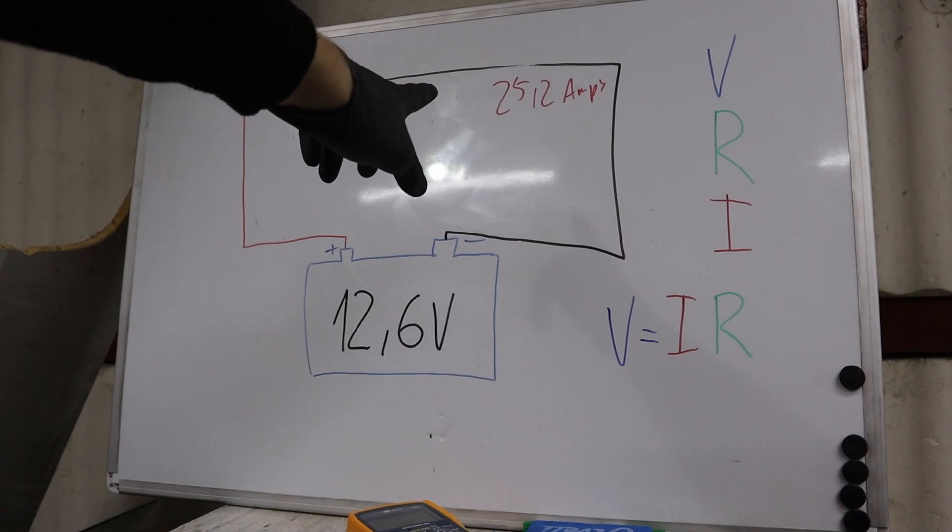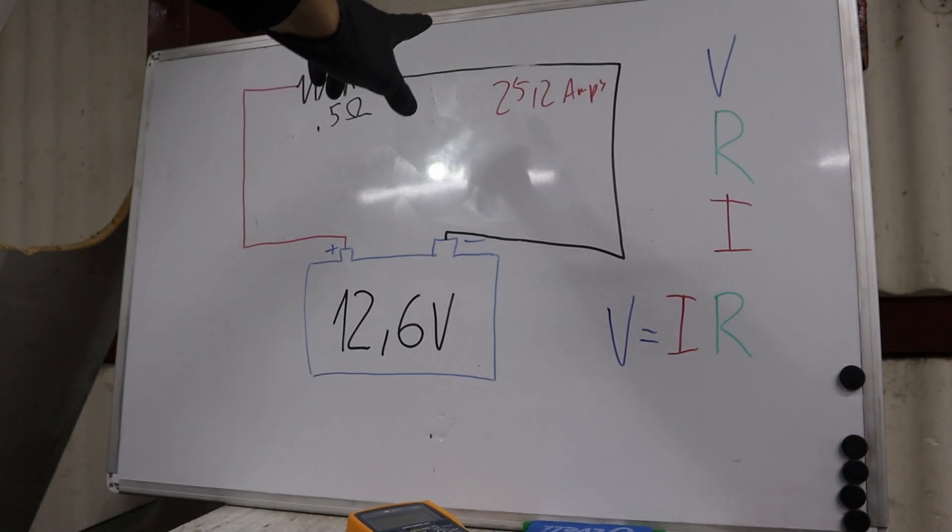For example, 25 amps. If you have a fuse for only 20 amps, it would already blow up.